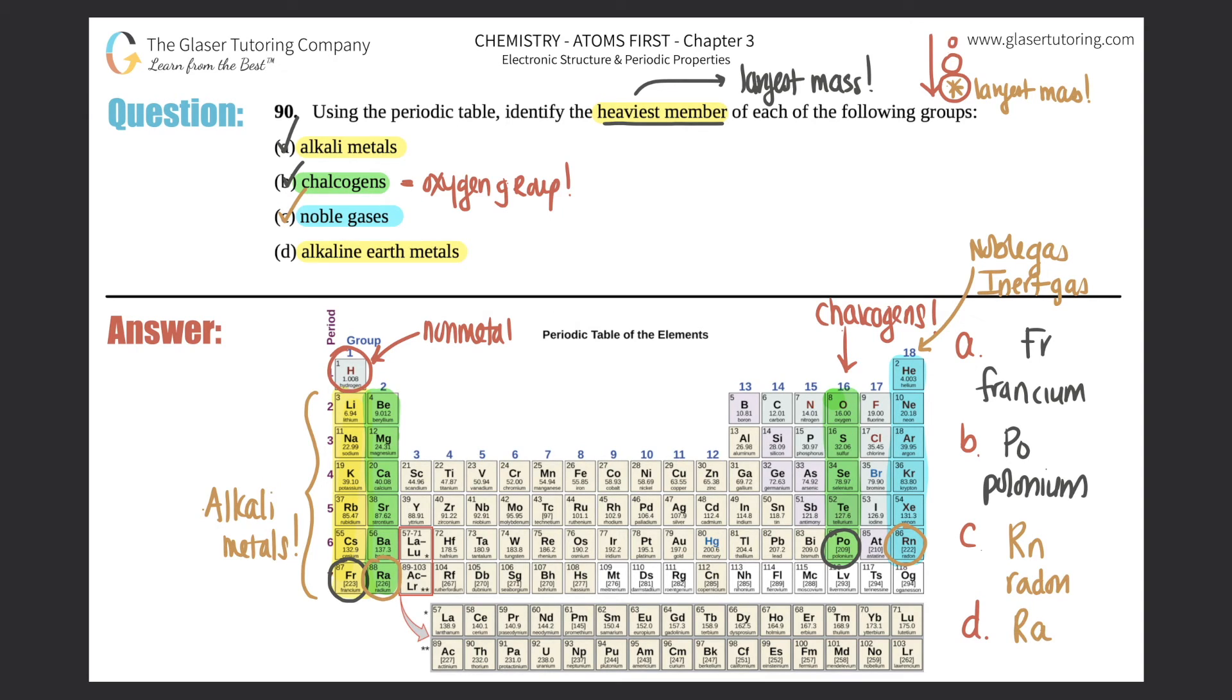Who would be the heaviest out of these? It would be element 88, radium. So that would be Ra. There are a lot of R elements and I sometimes get them confused, but Ra is radium.